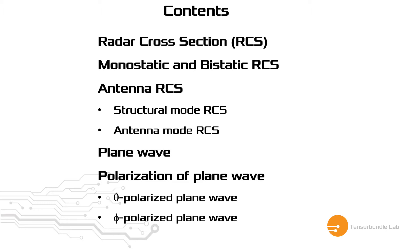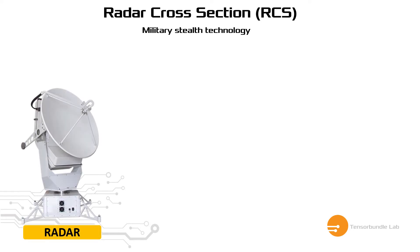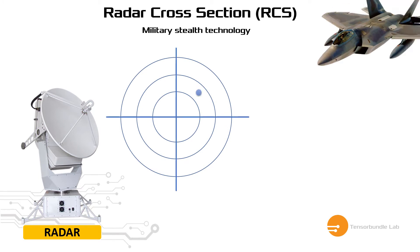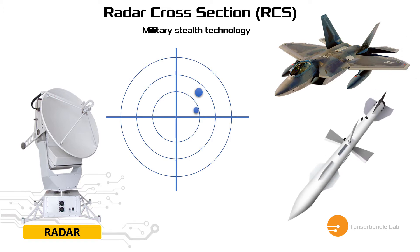That would be the content of the theoretical part of this video. The RCS application is primarily found in military stealth technology, because most military aircraft want to penetrate enemy areas without being detected. If detected, they will easily be destroyed by anti-aircraft missiles. Military technology primarily uses this radar cross-section, and apart from military, we also use it in aviation technology. It's a very important field in radar engineering and antenna engineering.